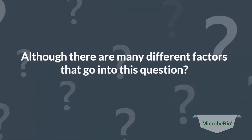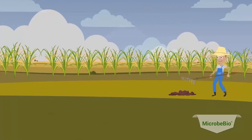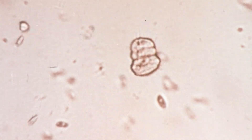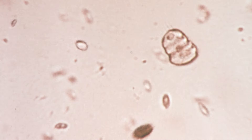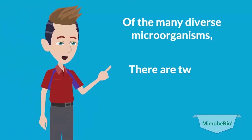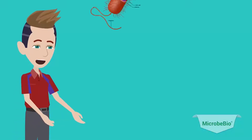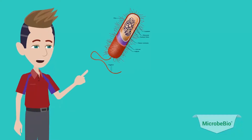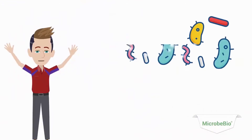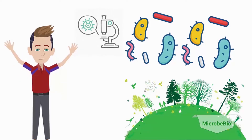Although there are many different factors that go into this question, one of the most important aspects to look at is the soil in which the vegetation is growing. In soil there are unseen inhabitants — microorganisms that live and develop within the earth. Of the many diverse microorganisms, there are two that I would like to introduce to you today. First, there is a single-celled, minuscule microbe called bacteria. We are solely focusing on the beneficial ecological aspect of this microorganism.